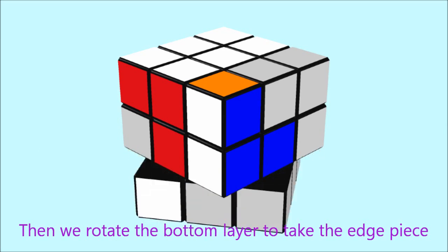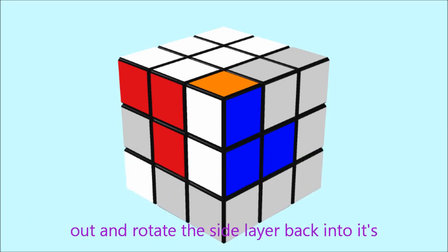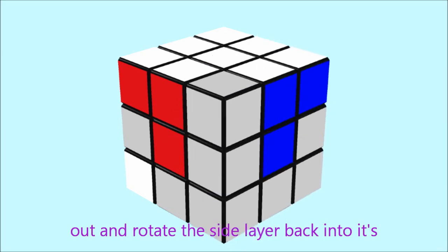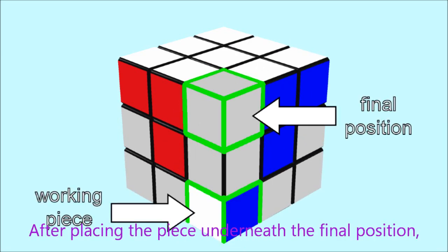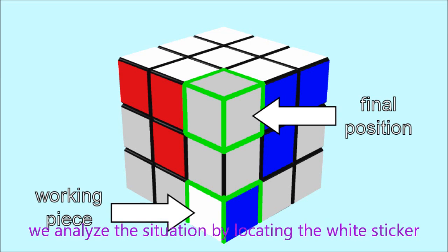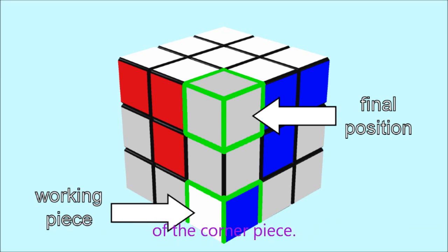Then we rotate the bottom layer to take the edge piece out and rotate the side back into its original position. After placing the piece underneath the final position, we analyze the situation by locating the white sticker of the corner piece. There are three possible states.